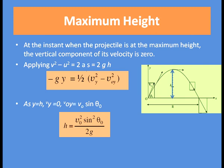Now, as y = h and Vy = 0 at the highest point, and Voy = V0 sin θ₀, the equation gives the maximum height H = V0² sin² θ₀ / (2g).